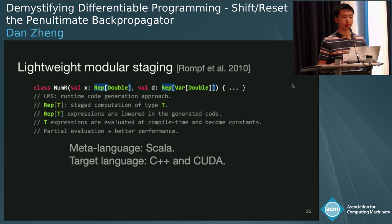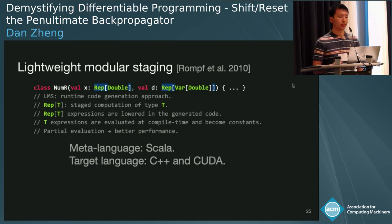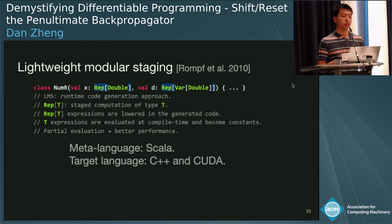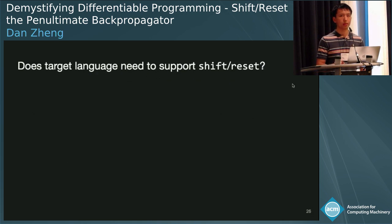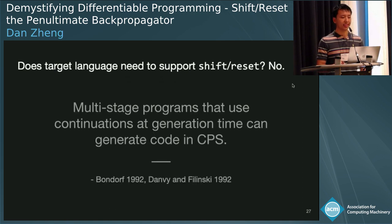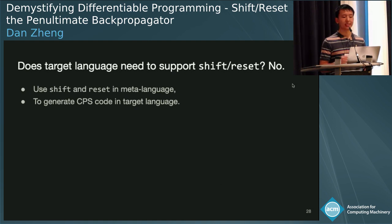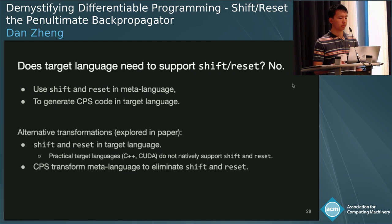That's what we did in the paper. We used a multi-stage programming technique called Lightweight Modular Staging in Scala, which is a runtime code-generation approach. The key thing is the rep type constructor — rep stands for representation, and it's a staged computation of some type. Rep expressions are lowered directly into generated code, while non-rep expressions are evaluated at compile time and become constants — a form of partial evaluation. Our meta-language is Scala and our target language is C++ and CUDA for performance. Since we formulated reverse mode AD using shift and reset, a natural question is whether the target language needs to support shift and reset. The answer is no: multi-stage programs that use continuations at generation time can generate code in CPS. We use shift and reset in the meta-language, but it generates CPS code in the target language.